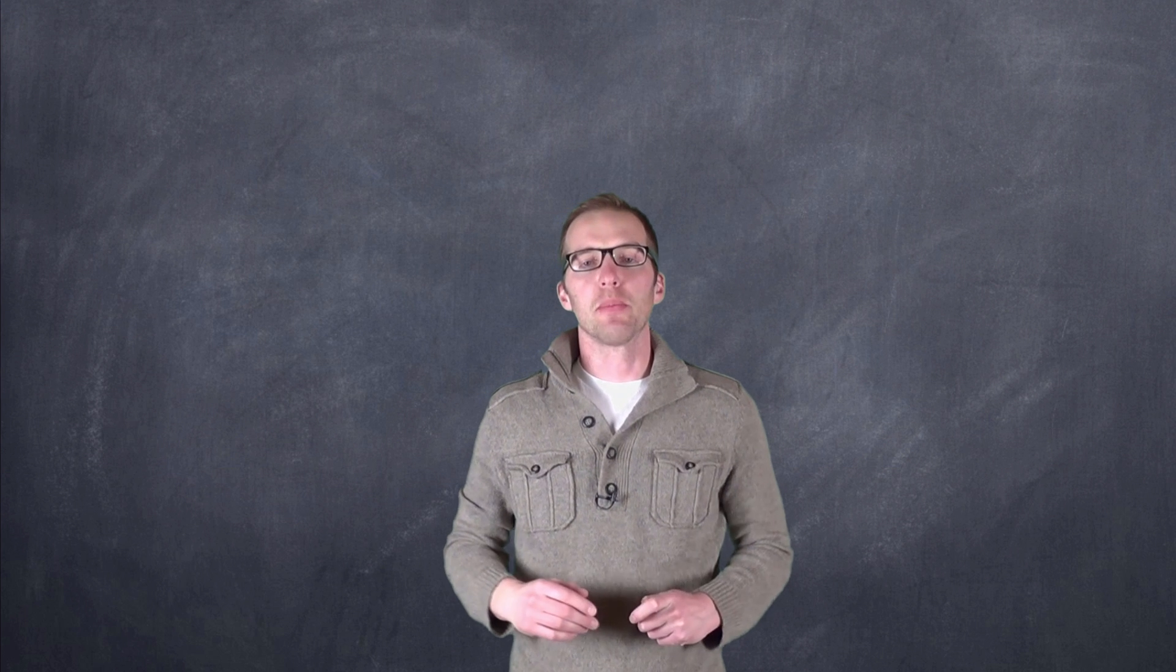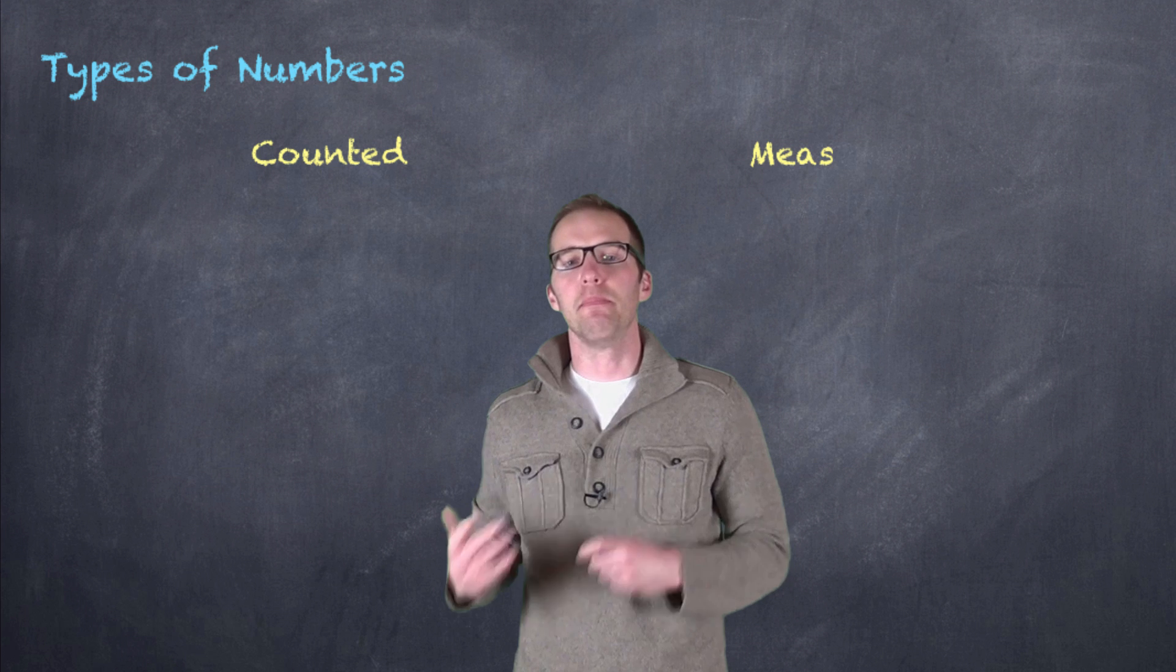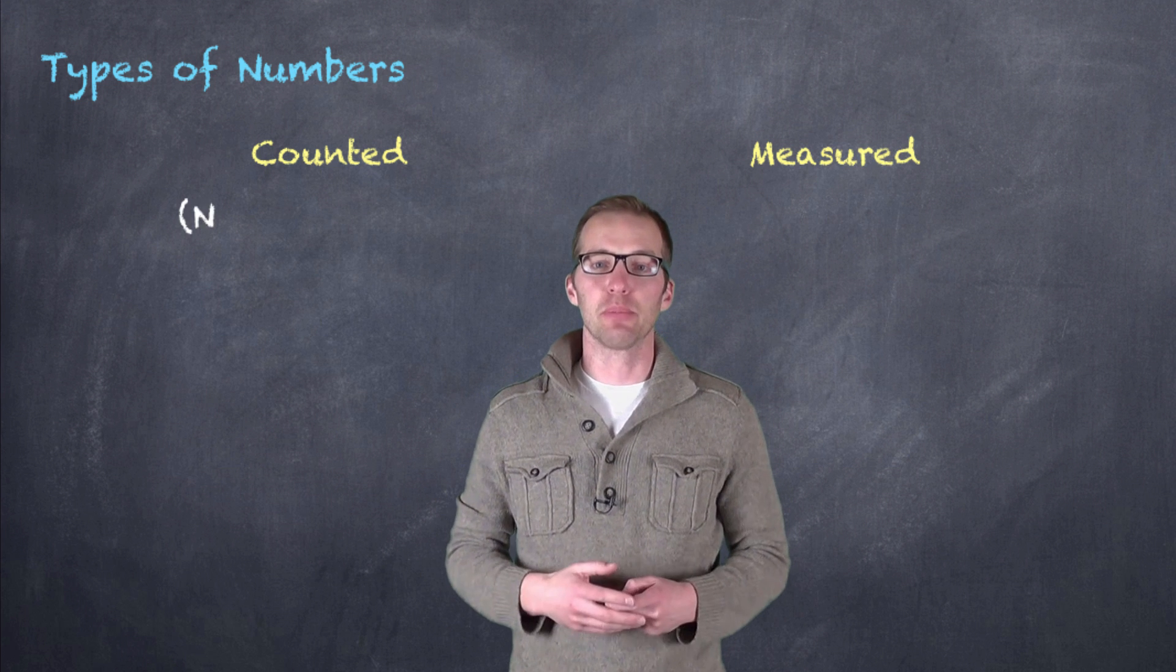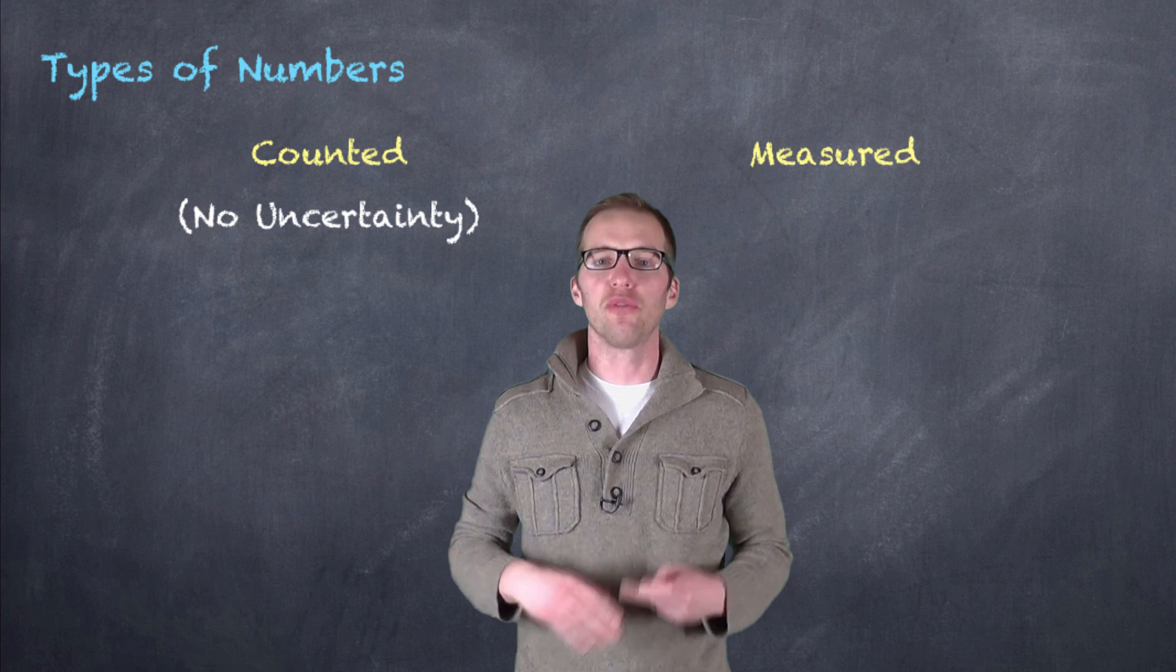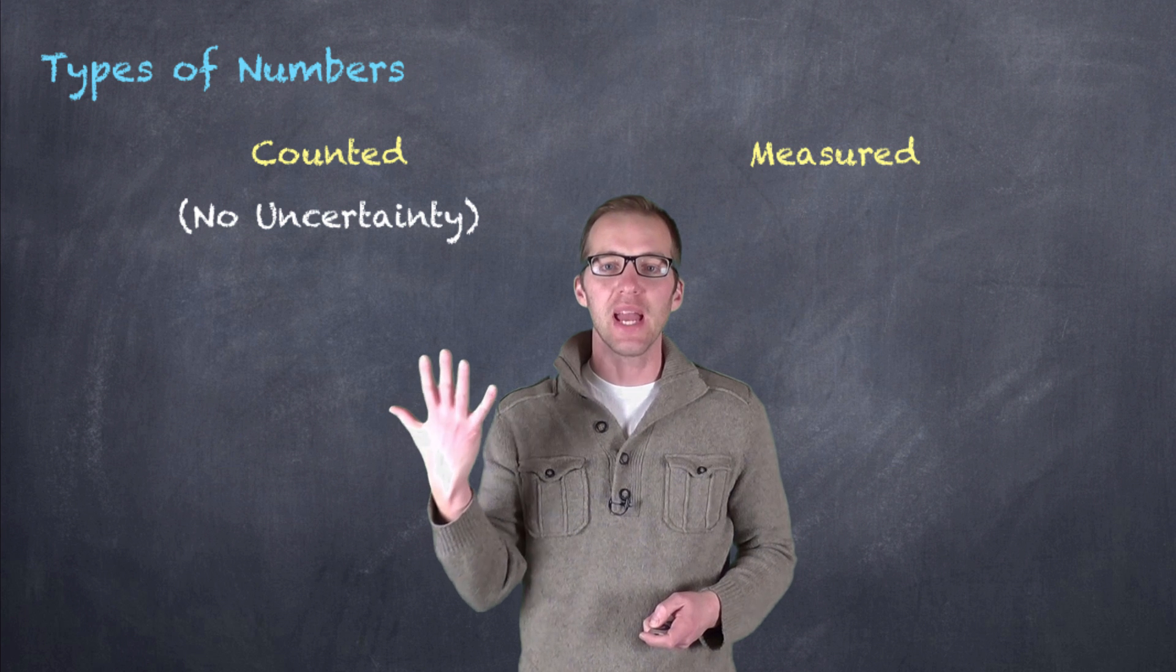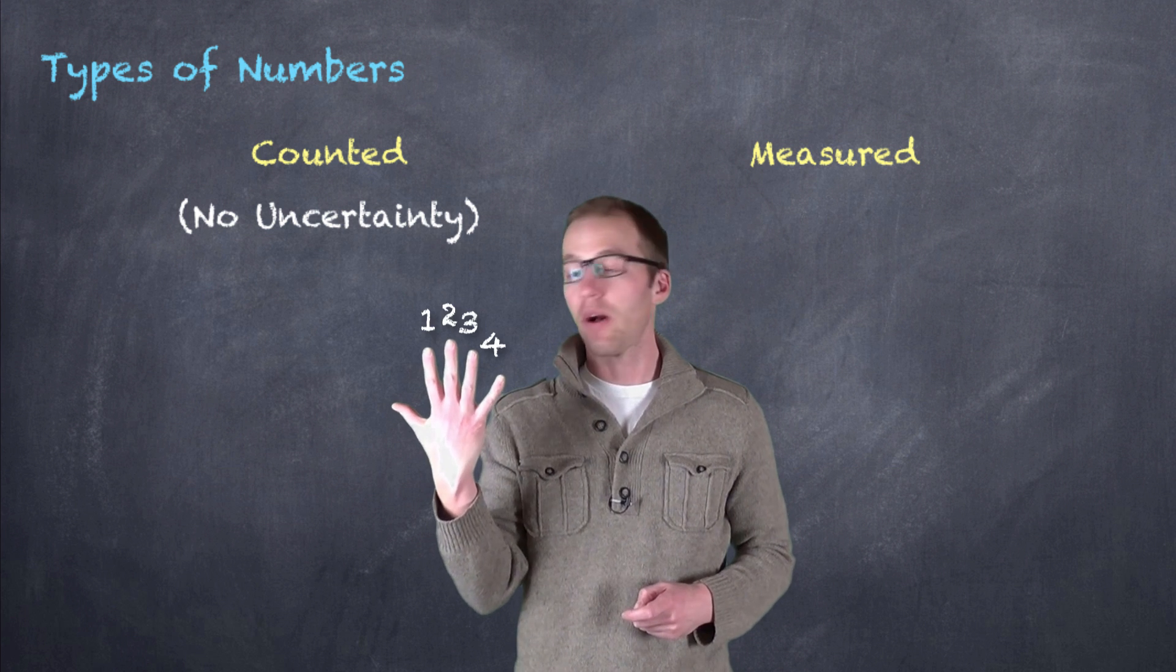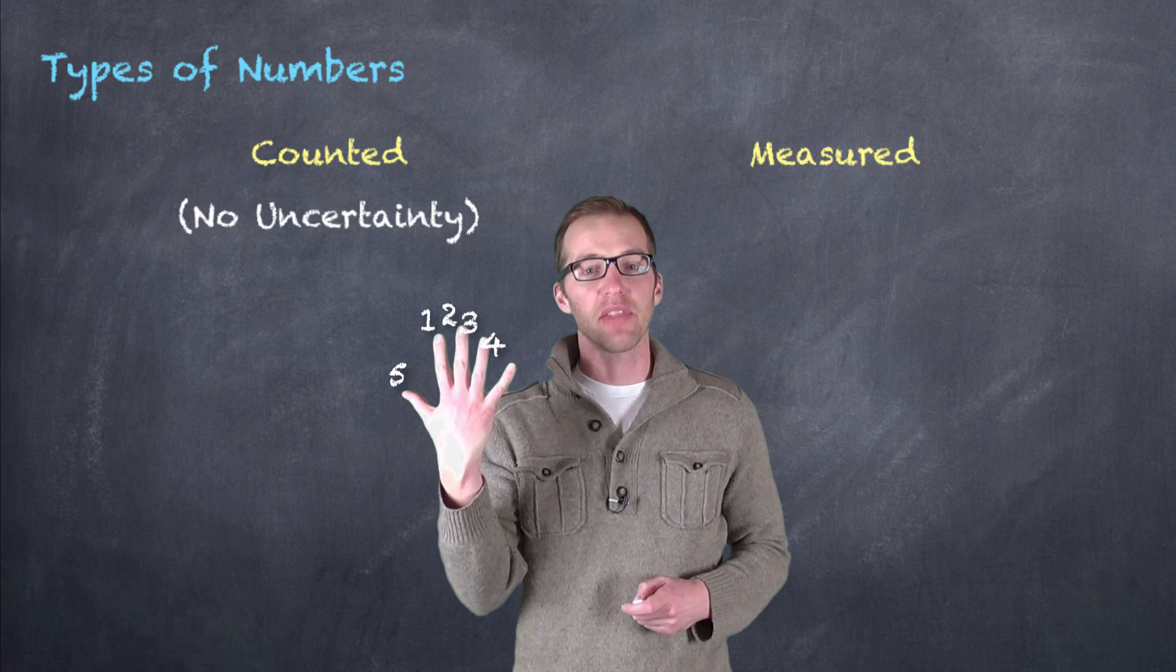When dealing with numbers, we have a couple of different types. There are counted numbers and measured numbers. Counting numbers is pretty easy when we're talking about precision or significance. There's no uncertainty involved when we count numbers of things. For example, we take a look at my hand. I know for sure that there are five digits there, four fingers and one thumb. I can count those and see those. I know with certainty that there are five things there.